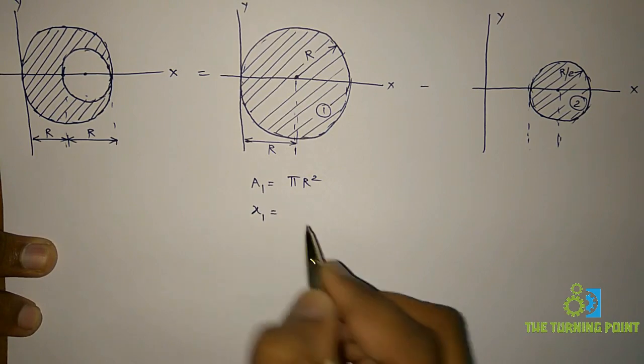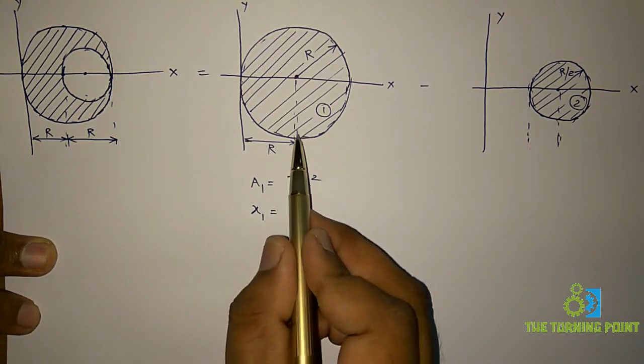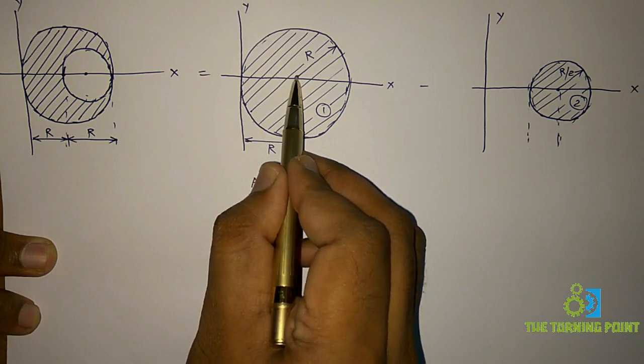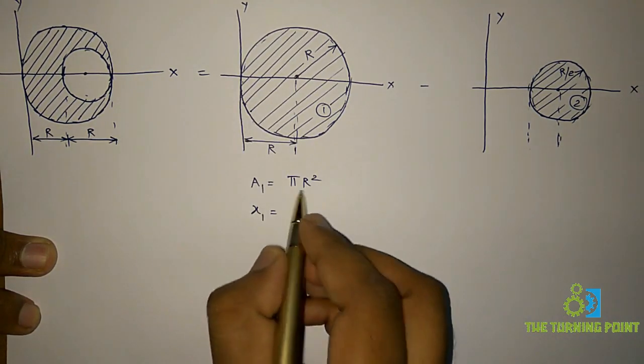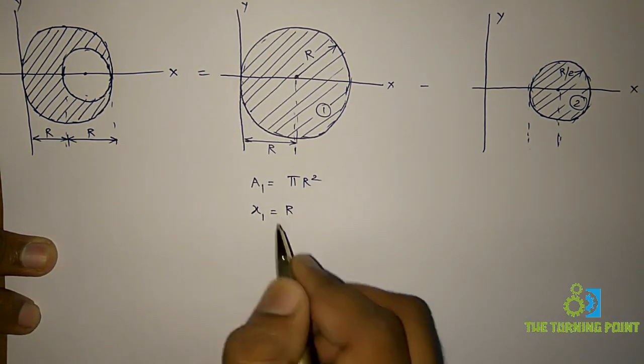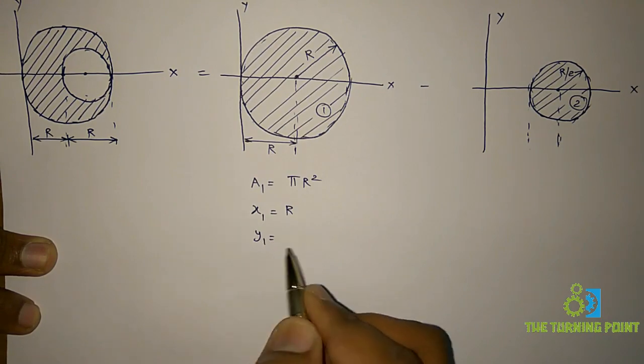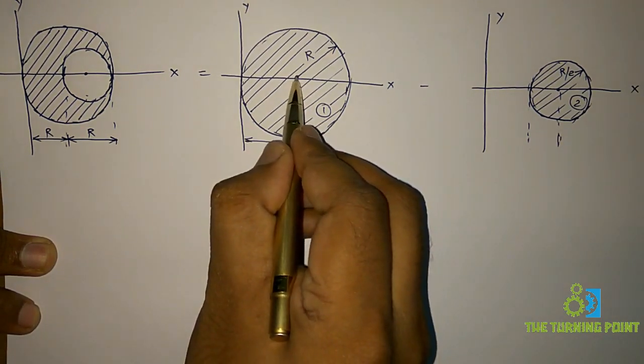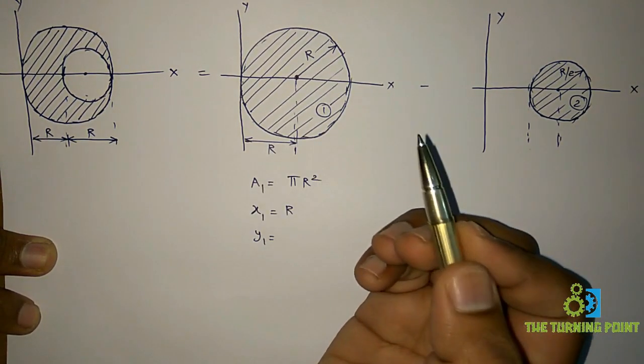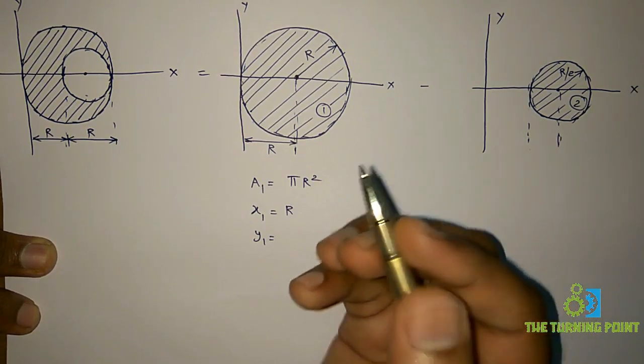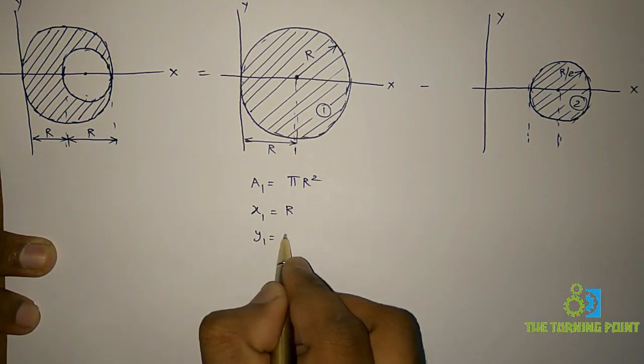And x1 is equal to the perpendicular distance from this point to y-axis, which is nothing but x-coordinate. So that is r. And y1 is the perpendicular distance from this point to x-axis. That point is on x-axis. So there won't be any y-coordinate. It is 0.